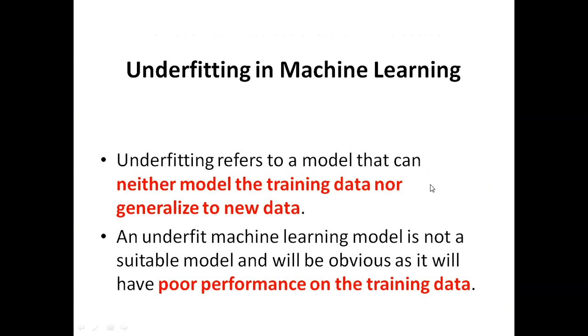Underfitting, on the other hand, refers to a model that can neither model the training data nor generalize to new data. In both cases it just fails. An underfit machine learning model is not a suitable model and will be obvious as it will have poor performance on training data. So this was basically about underfitting and overfitting. This is basically when we train the...